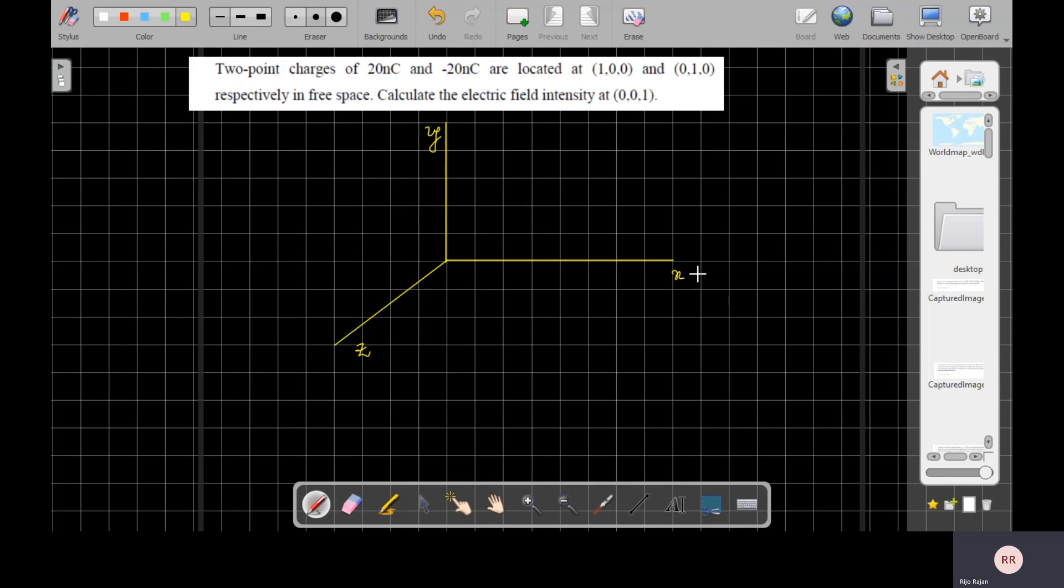This is my three-dimensional plane here X, Y, Z, the plane coordinates, and here we have two charges. 20 nanocoulomb and minus 20 nanocoulomb are located at (1,0,0). That means 20 nanocoulomb is located at (1,0,0), it is located right here.